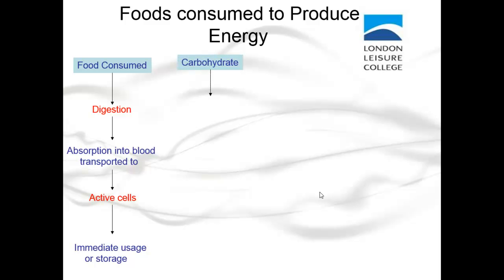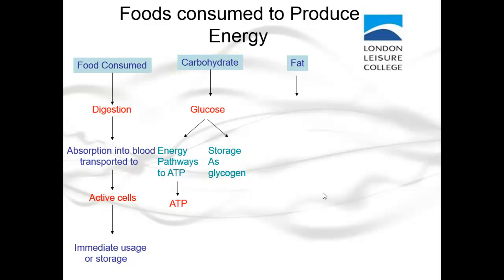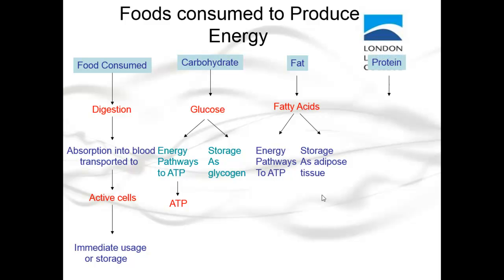Carbohydrates are transferred to glucose, which is either used to create energy and form ATP, or stored as glycogen in the muscles. Fat is broken down into fatty acids and is either used for energy or stored as adipose tissue, which is another word for body fat. Protein is broken down into amino acids, where it's used for energy or for the storage and repair of body tissue.